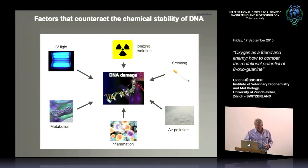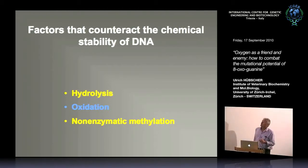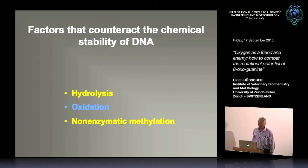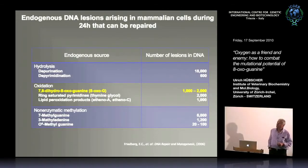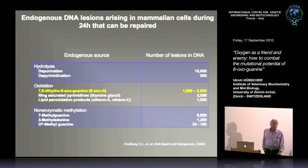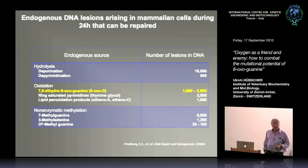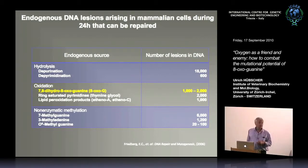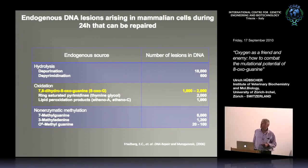Going back to the original papers by Tom Lindahl, we know that hydrolysis, oxidation, and non-enzymatic methylation are the three main factors that counteract DNA. This is not an infrequent event — every cell every day has the capacity to repair about 20,000 depurinations, or in our case oxidation events — 1,000 to 2,000, and in cancer cells up to 100,000 alterations of G, because G has the lowest redox potential of all four bases and is therefore very frequently oxidized by radicals.